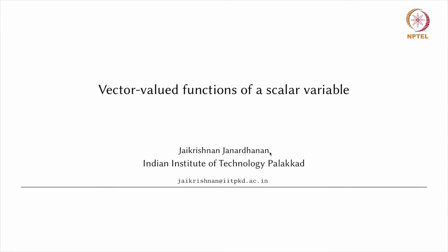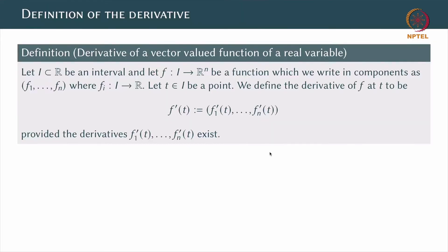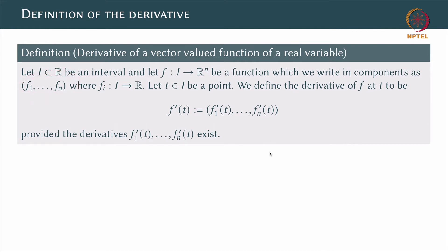We will now study how to define the derivative for a vector valued function of a scalar variable — in other words, of curves. Throughout this part, we will be considering intervals I which are subsets of R, and we are considering a function f from I to R^n. Since this is a function taking values in R^n, we can write down the function in terms of its component functions f1 to fn, where each fi is a function from I to R.